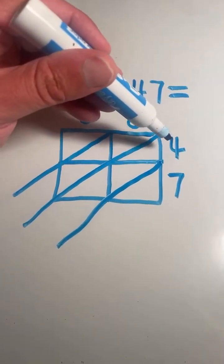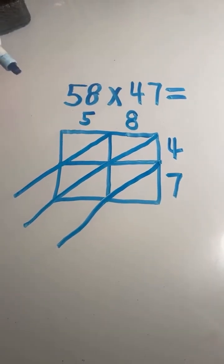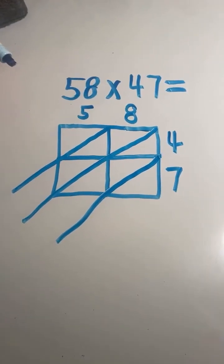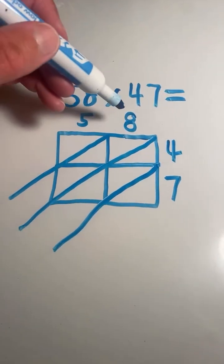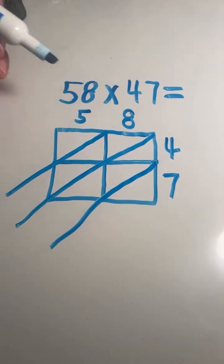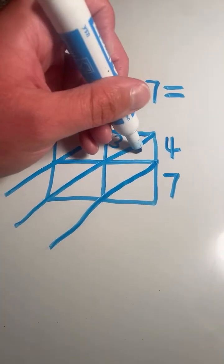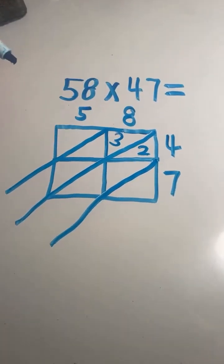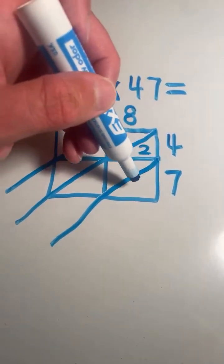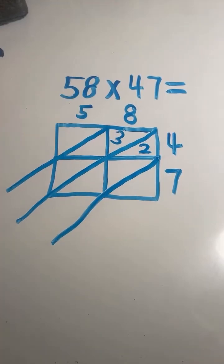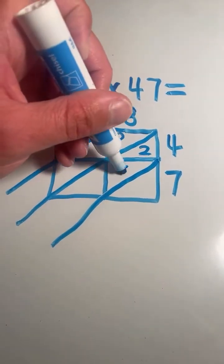So we're going to start off by multiplying 8 times 4. The answer is going to go in this top square here, and each digit is going to go in a separate triangle. 8 times 4 equals 32, so 3 in the top triangle, 2 in the bottom triangle. Next we're going to multiply 8 times 7. 8 times 7 equals 56, so 5 in the top triangle, 6 in the bottom triangle.